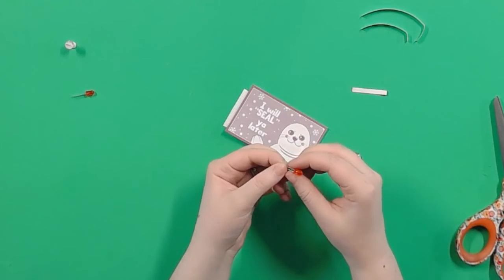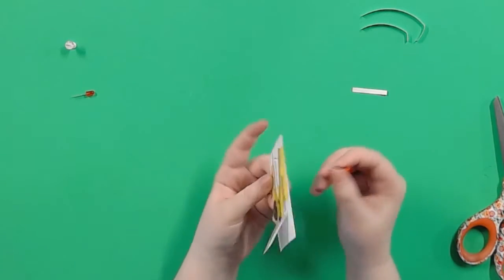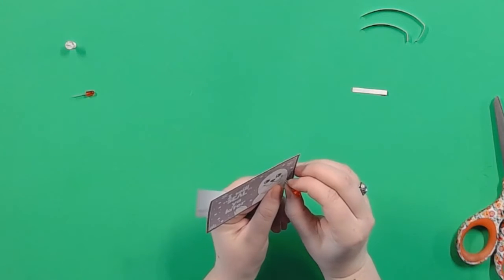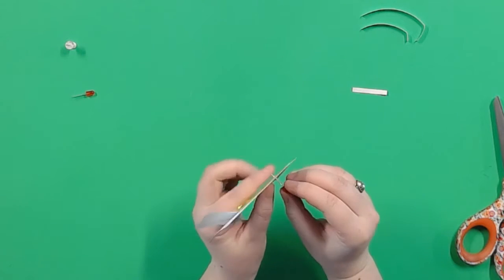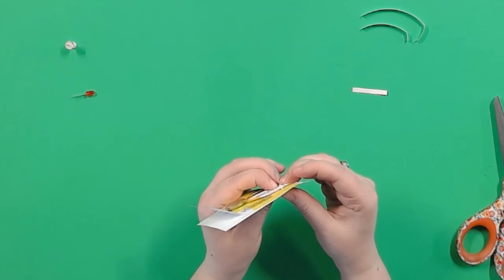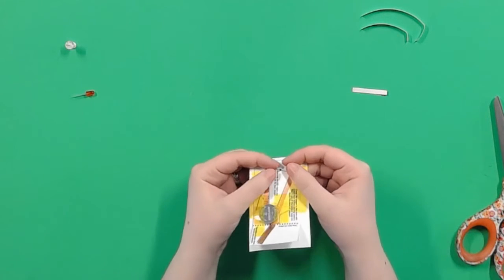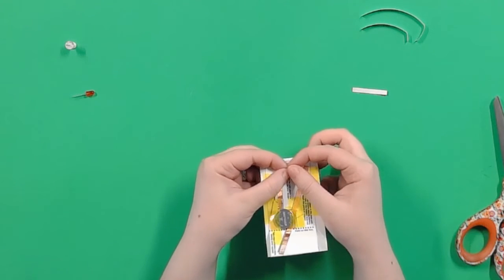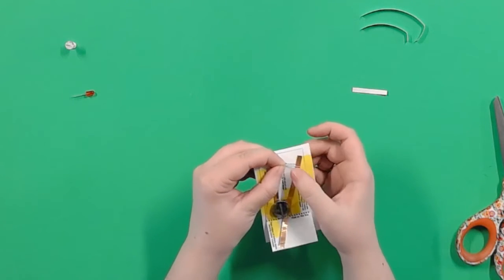Push your LED's legs through one of the holes you punched. You might have to give a little extra push at the end to get the light to be pressed all the way against the card. Then fold your legs down so that the long positive one touches the long copper tape and the short negative one touches the short copper tape.